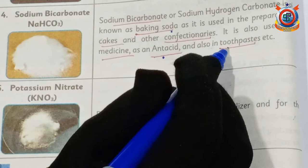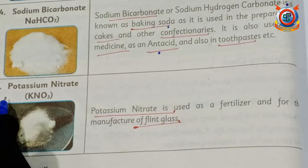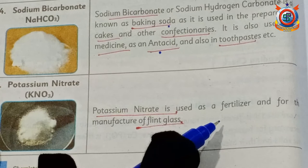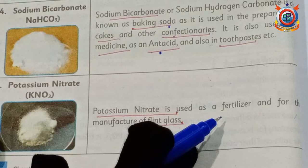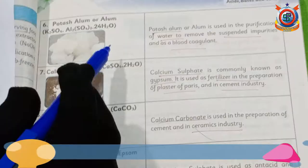The fifth example is potassium nitrate. Potassium nitrate is used as a fertilizer — a chemical used for growing crops and increasing their fertility. It is also used in the manufacturing of flint glass.